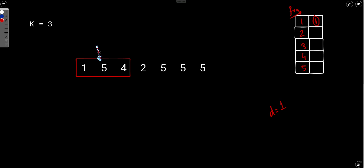Now we take 5: its frequency gets incremented to 1. Since 5's frequency went from 0 to 1, we again got a unique element, so we modify distinct to 2. Now we go to 4: again it goes from 0 to 1, so we got another distinct element and increment to 3. After processing the first subarray, we check the value of distinct. It is 3, which equals k, so this subarray is valid — it contains exactly 3 distinct elements and has length 3.